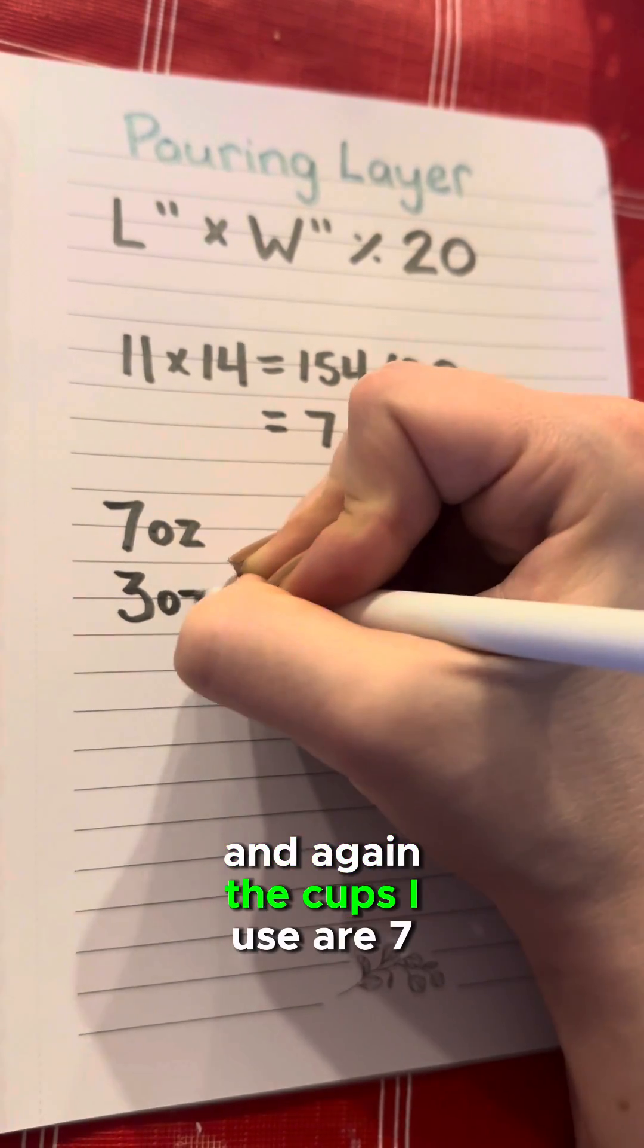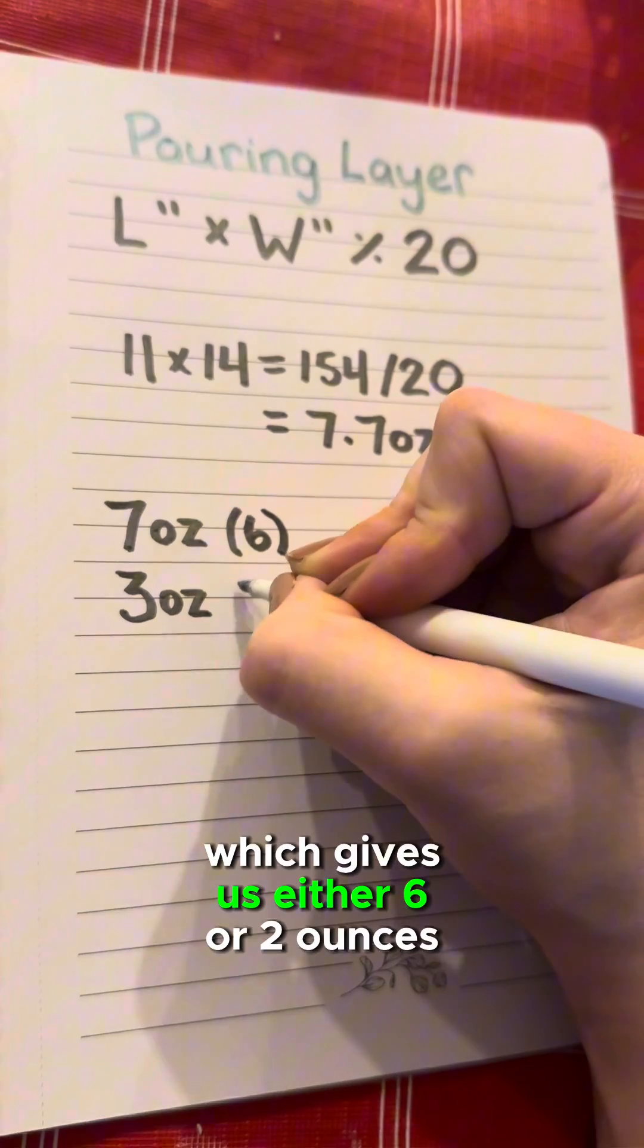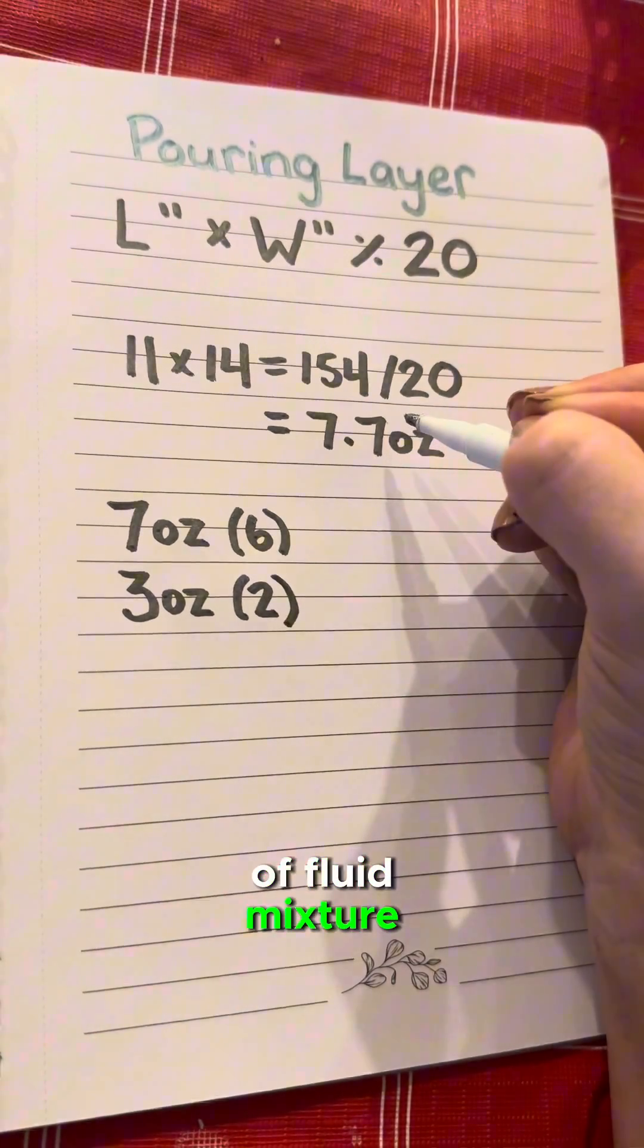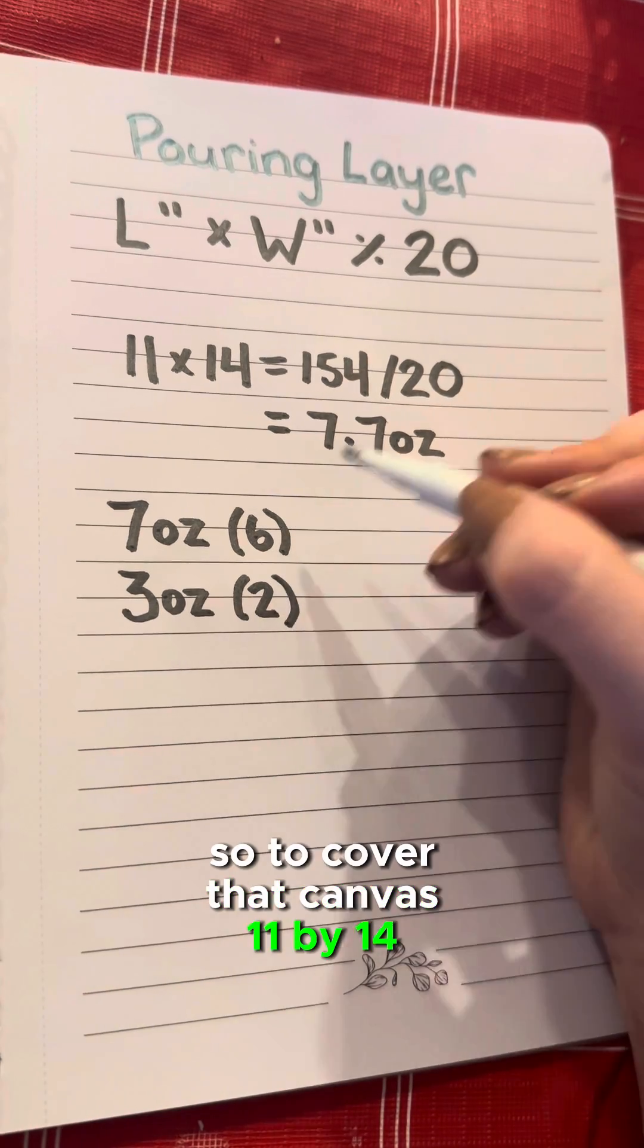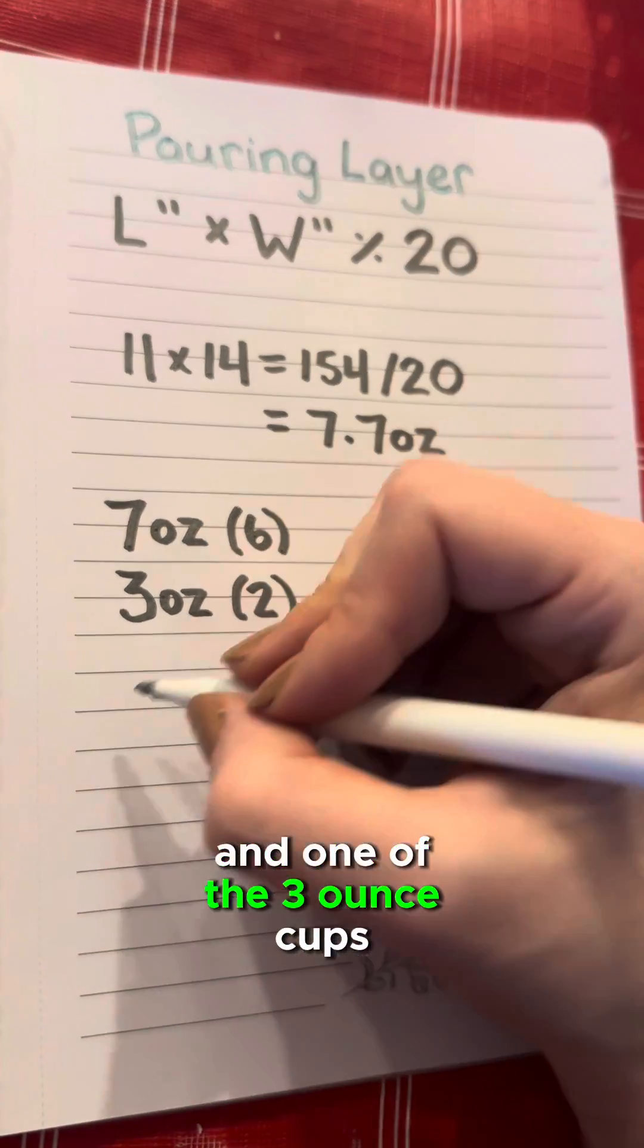And again, the cups I use are 7 and 3 ounces which gives us either 6 or 2 ounces of fluid mixture. So to cover that 11 by 14 canvas, I would need 1 of the 7 ounce cups and 1 of the 3 ounce cups.